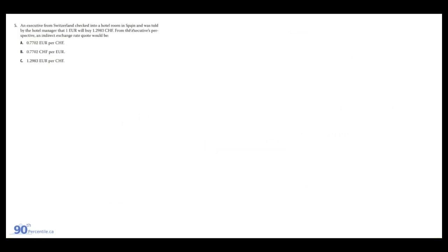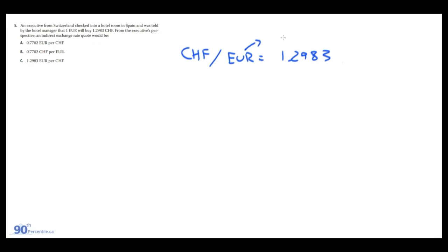A Swiss executive in Spain is told that one euro will buy 1.2983 Swiss francs (CHF). From the executive's perspective, an indirect exchange rate quote would be which one? We create the direct quote first: CHF/EUR = 1.2983, since 1 euro costs 1.2983 Swiss francs. To create the indirect quote, we take 1 divided by 1.2983 and get 0.7702.